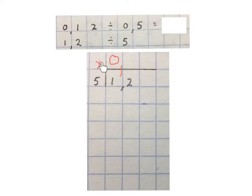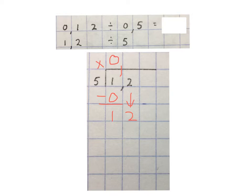Then we say 5 goes into 1: 0 times. 0 times 5 is 0, and you write it underneath the 1. We minus the 0 from the 1, that gives you 1. Then you bring this 2 down, then you have a 12 here. Then you say 5 goes into 12: 2 times, which we write up here. 2 times 5 is 10, which we write down here.